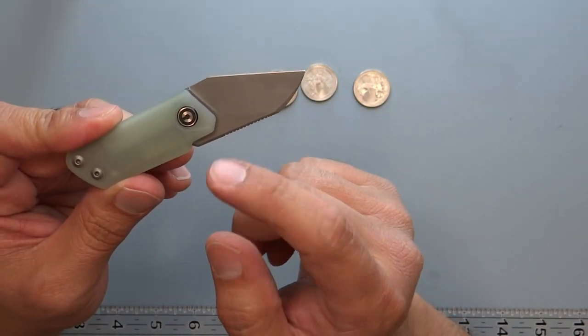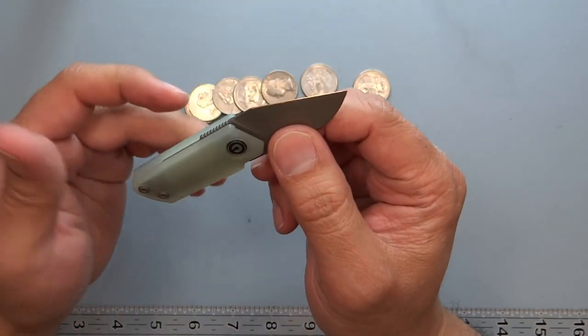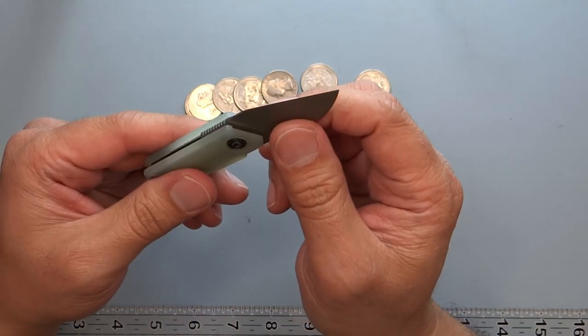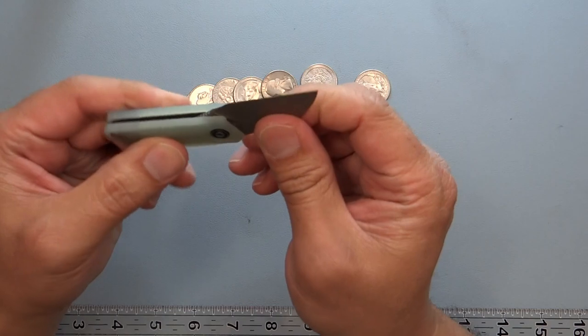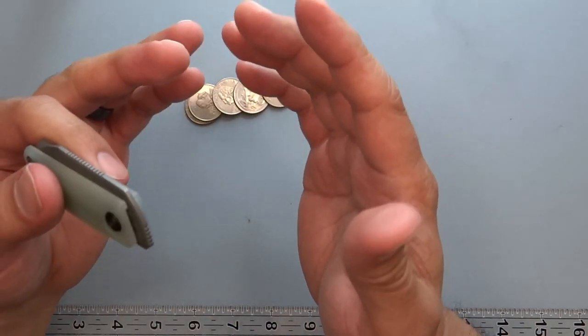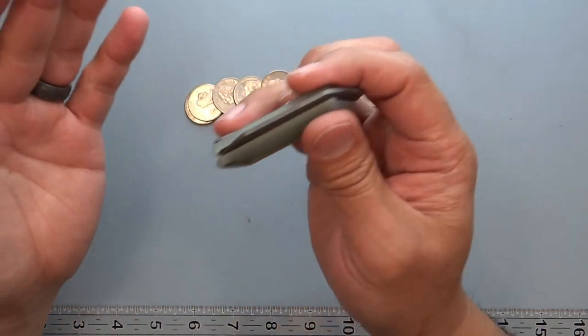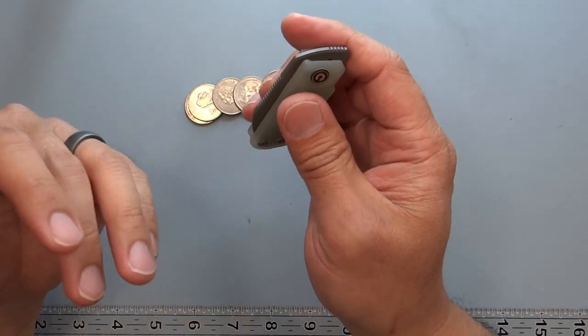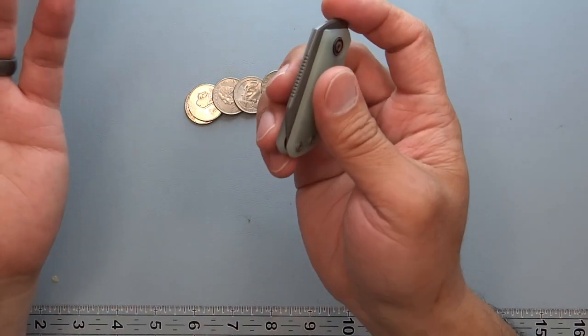So this is going to be about eight degrees on this one, 9CR18MOV. So about 440s type of steel is going to be where that is. So it's kind of that budget steel, still a little bit of upgrade from 8CR, but kind of the same in that market. It's going to be easy to sharpen, won't last forever, but easy to get your edge back, which is a nice thing for that.